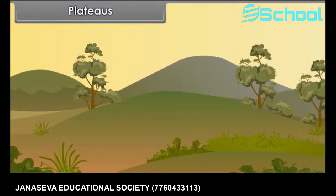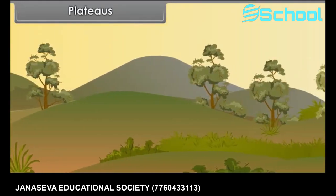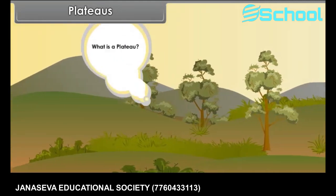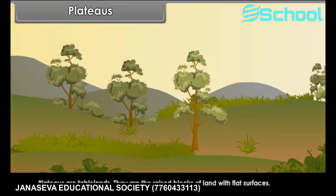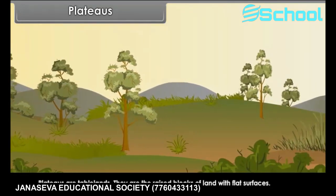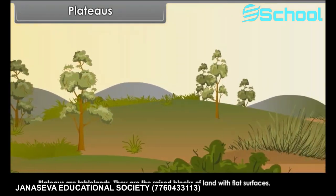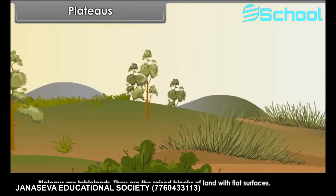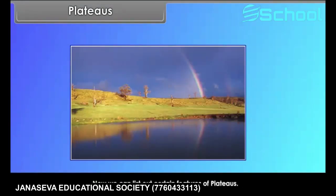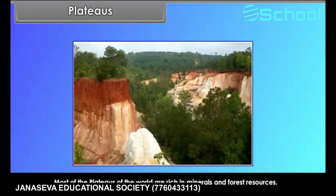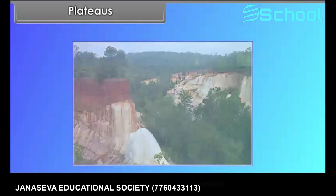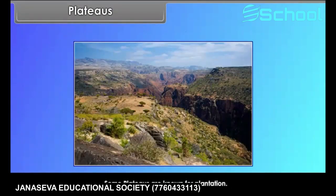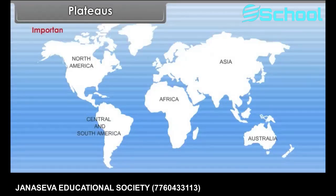The next type of landform is plateaus. Plateaus are table lands — raised blocks of land with flat surfaces. We can list out certain features of plateaus. Most of the plateaus of the world are rich in minerals and forest resources. Some plateaus are known for plantation.